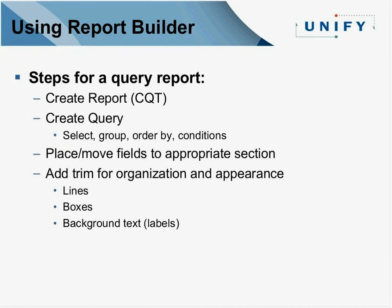How do you actually create a report in Report Builder? For a CQT with a query tied to it, you construct the query first — you can go back and modify it later — choosing the tables, join conditions, and columns to select. You don't want to select all columns because you usually won't use all that data. You can filter, group, and order the data. Once the query is done, Report Builder creates a default report, which you can then modify, move things around, delete, change widths, or drag and drop input items to create labels, boxes, and lines.